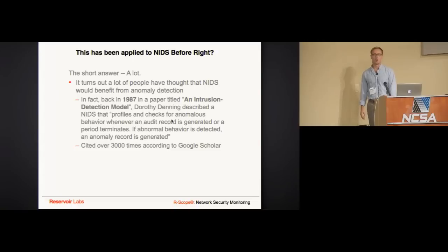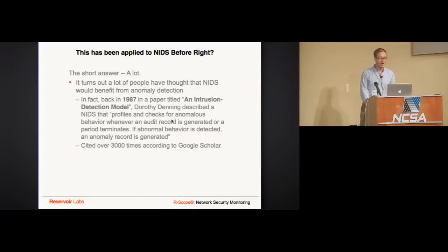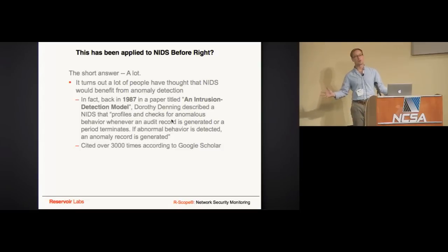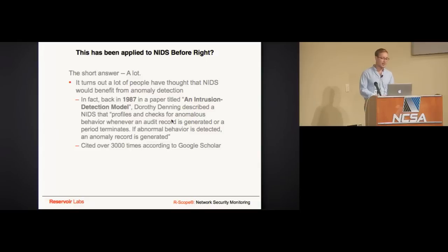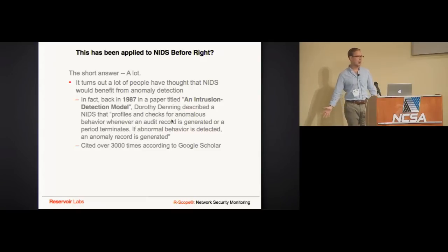For example, I wanted to find what a normal connection duration is, and when durations get super long, maybe that indicates data exfiltration. It turns out many people have been thinking about this for a long time. Back in 1987, a paper called 'An Intrusion Detection Model' by Dorothy Denning framed out what would become network intrusion detection systems, describing a system that was both rule-based and statistical anomaly-based. This paper has been cited over 3,000 times in Google Scholar.